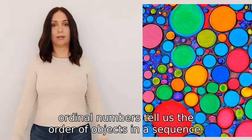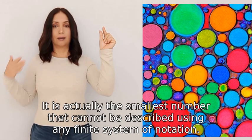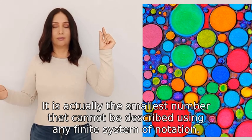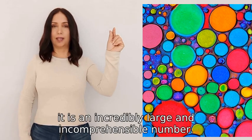However, epsilon zero is not like any ordinary number. It is actually the smallest number that cannot be described using any finite system of notation. To put it simply, it is an incredibly large and incomprehensible number.